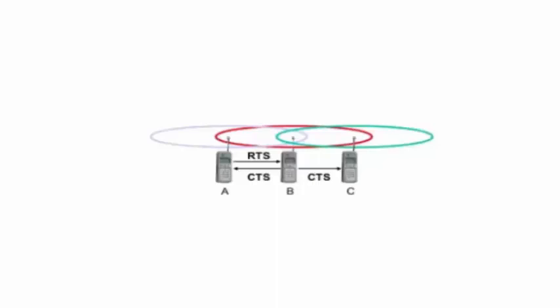So, basically what happens in hidden terminal problem is when A wants to send data to B it will send RTS packet to B. And since B is currently free it will send CTS packet to A. But this CTS packet will reach both A and C simultaneously.